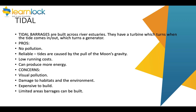Tidal barrages are built across a river estuary where a turbine turns when the tide comes in, turning a generator to make electricity. They're reliable because tides are caused by the pull of the Moon's gravity, not the wind, so a tide will always come in and out every day. They have low running costs and produce more energy than wave power, but concerns include visual pollution, environmental damage, high expense, and limited suitable locations.